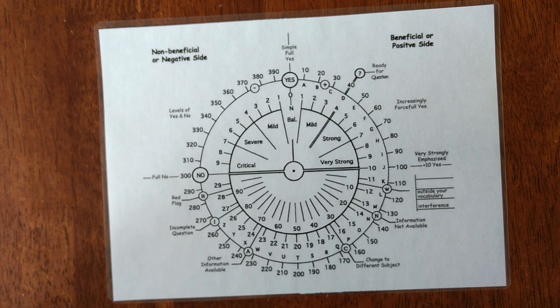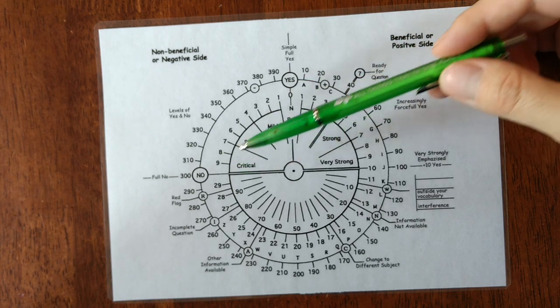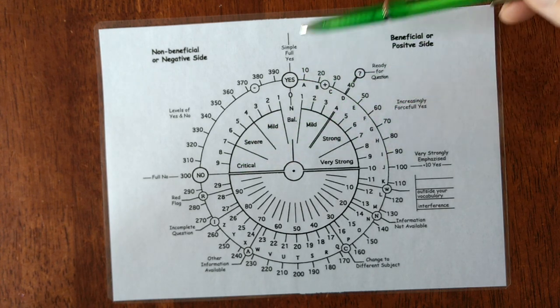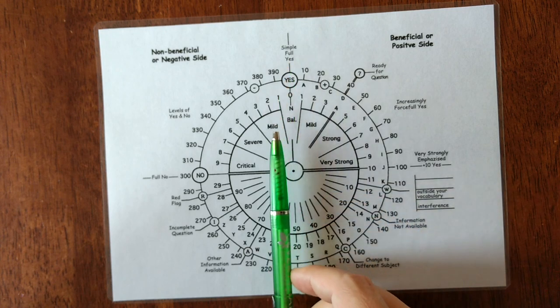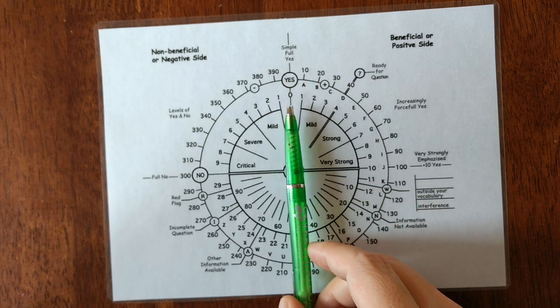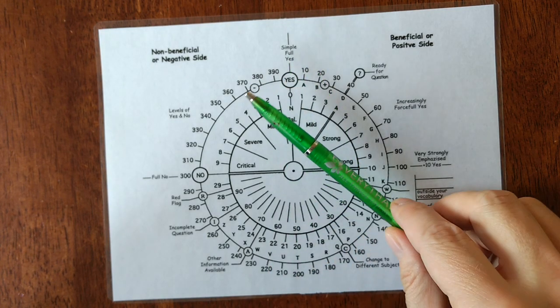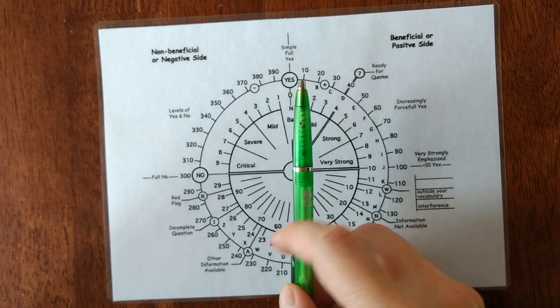You can just ask on a scale of 0 to 10, from minus 10 to plus 10, how is this place affecting me right now? And then you can have an answer neutral here, so it means it's neither bad or good for you, it's detrimental, or it's positive.